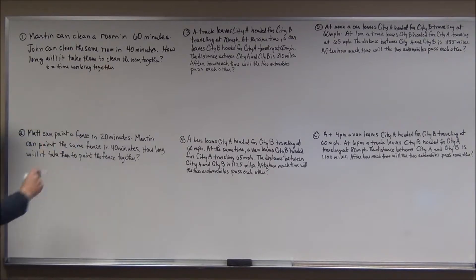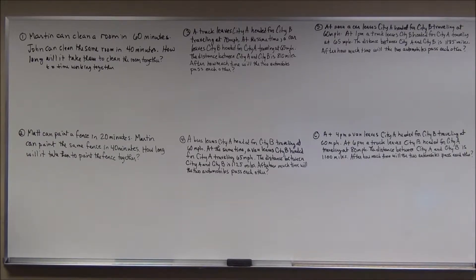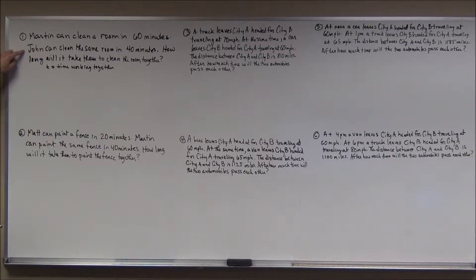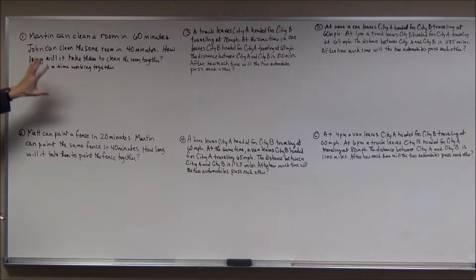Now, this is called a work word problem. And the trick with the work word problem is that you have two people doing this job together. They're each going to do a fraction of the job — they might both do half the job, so Martin does half and John does half, and one job is done. But since Martin is a little slower than John — it takes him 60 minutes to clean the room — they're not going to do exactly half the work. John's going to do a little bit more because he works a little bit faster. So what you want to do is figure out what fraction John does, what fraction Martin does, add them together, and set it equal to one job done.